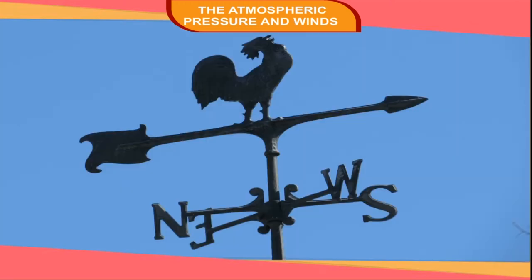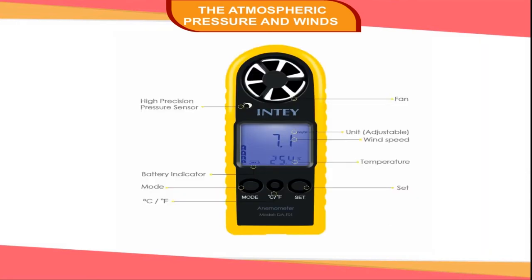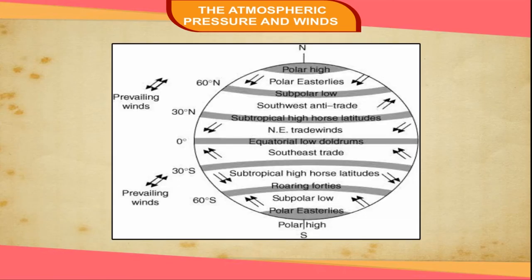The instrument used for recording the direction of wind is called a wind vane. The speed of wind depends on the pressure differences between two regions. When the difference is high, the wind rushes from the high pressure region to the low pressure region at a great speed, as in a storm. The speed of wind can be measured with the help of an instrument called an anemometer. Winds can be broadly classified as permanent winds and local winds. Permanent winds are the winds which blow throughout the year in a particular direction and over a particular region. They are also called prevailing winds or planetary winds.